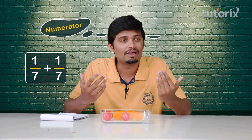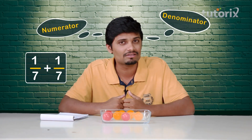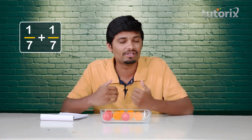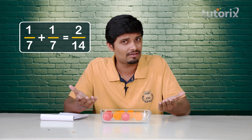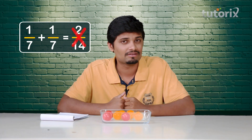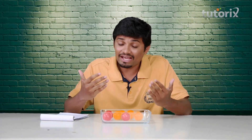Maybe we should add the numerators and add the denominators. So the result may be 2 by 14. But I have 7 balls here, right? Then how can the denominator be 14? Maybe I have made a mistake.